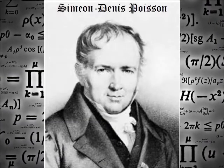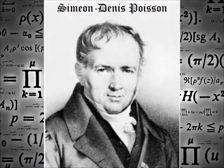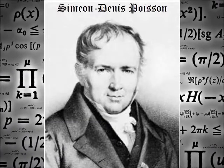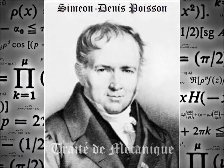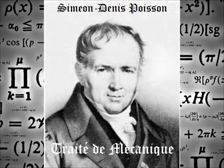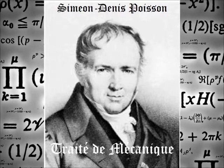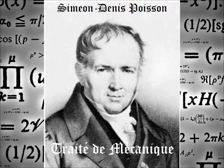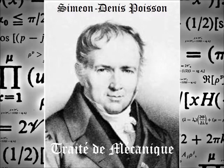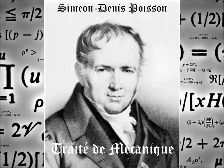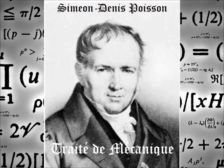In 1811, French mathematician Simone-Denis Poisson published Traite des Mécaniques, or On the Mechanics of Materials, which among other things described the way materials react to external forces. One such reaction he described was known as Poisson's ratio.